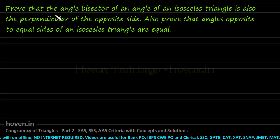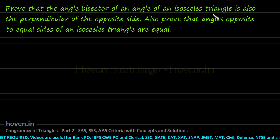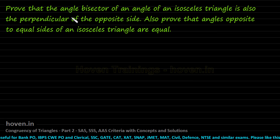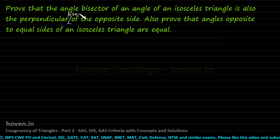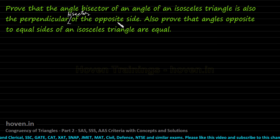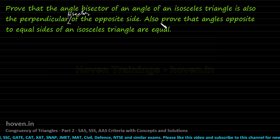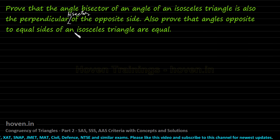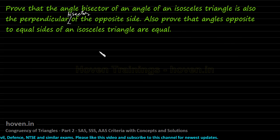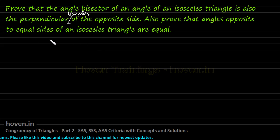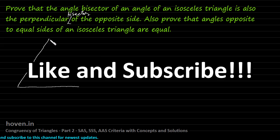Prove that the angle bisector of an angle of an isosceles triangle is also the perpendicular bisector of the opposite side. Also prove that angles opposite to equal sides of an isosceles triangle are equal. So we have to prove two facts for an isosceles triangle. Let us draw an isosceles triangle so that we can prove our facts.